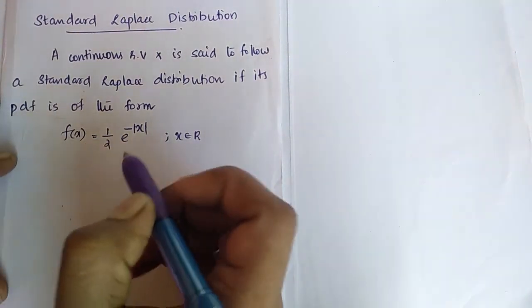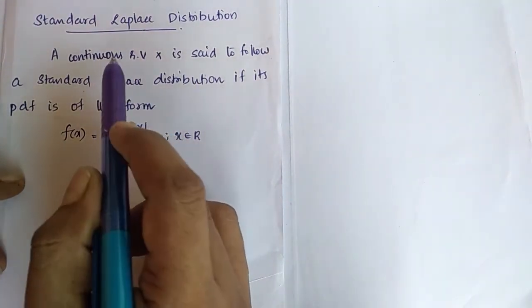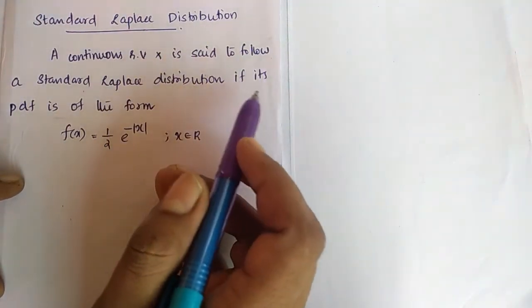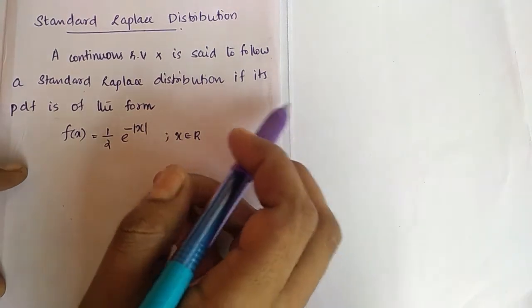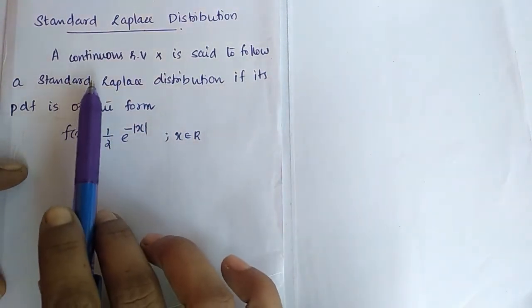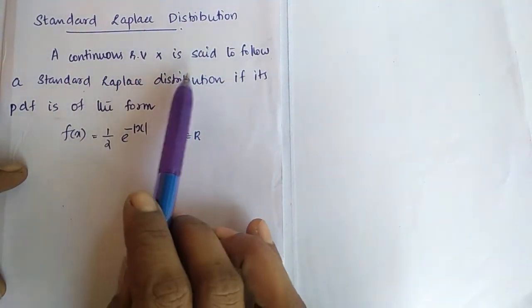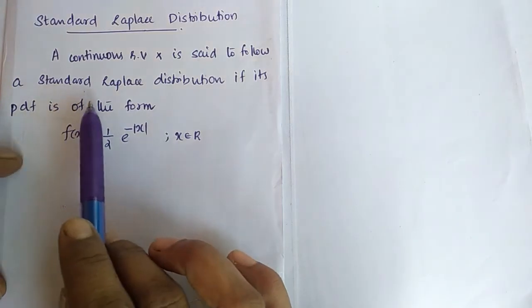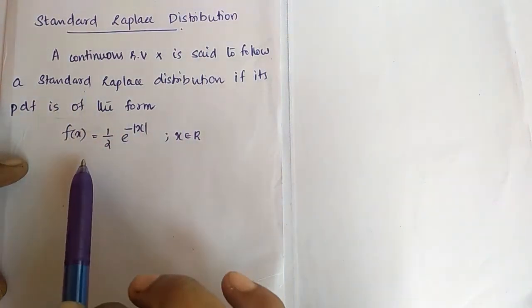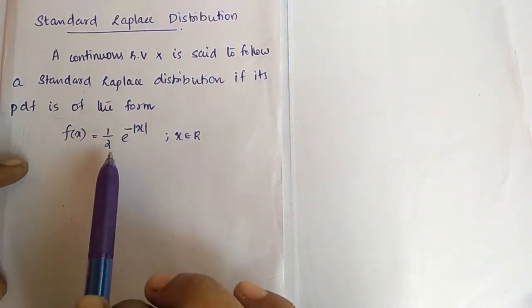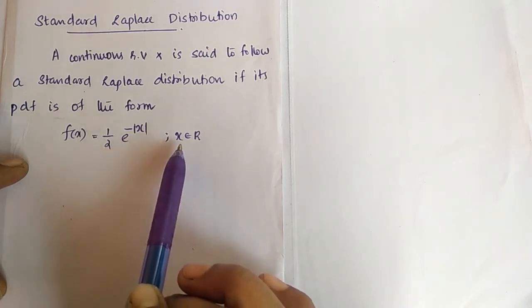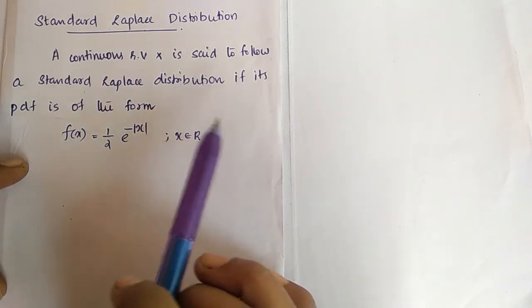Hi friends, today our topic is standard Laplace distribution or double exponential distribution. Its definition is: a continuous random variable X is said to follow a standard Laplace distribution if its PDF is of the form f(x) = (1/2) e^(−|x|) for x belonging to the real numbers.